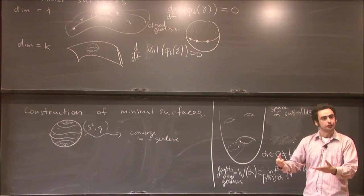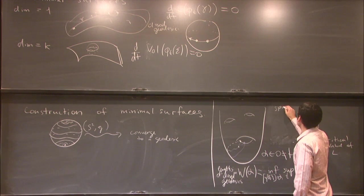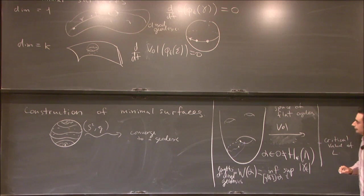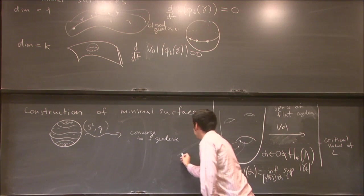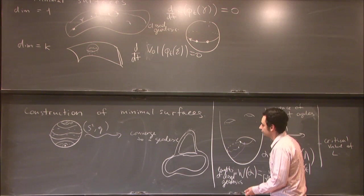We are forced to consider the space of surfaces with varying topology, and so what's been especially successful was considering the space of flat cycles. Here our functional will be the volume functional, where as we move from point to point your topology is allowed to change, and the notion of distance is that two polyhedral Lipschitz cycles are considered close to each other if their difference bounds a chain of small volume.